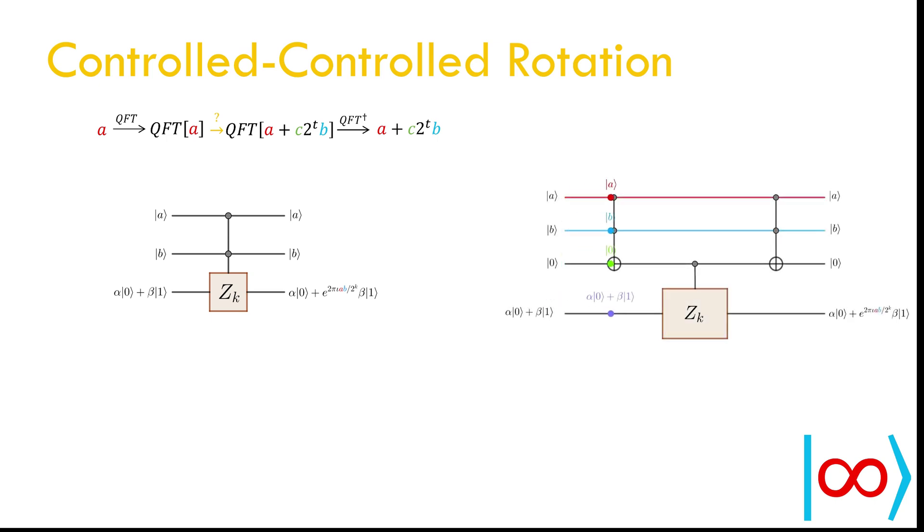This can be obtained using old controlled rotations using two CC NOT gates as follows. We use an extra qubit to store the product of the two controlled qubits A and B. This qubit is 1 only when both A and B are 1. Then use this extra qubit to control the rotation. Finally, use additional CC NOT gate to restore the intermediate qubit.